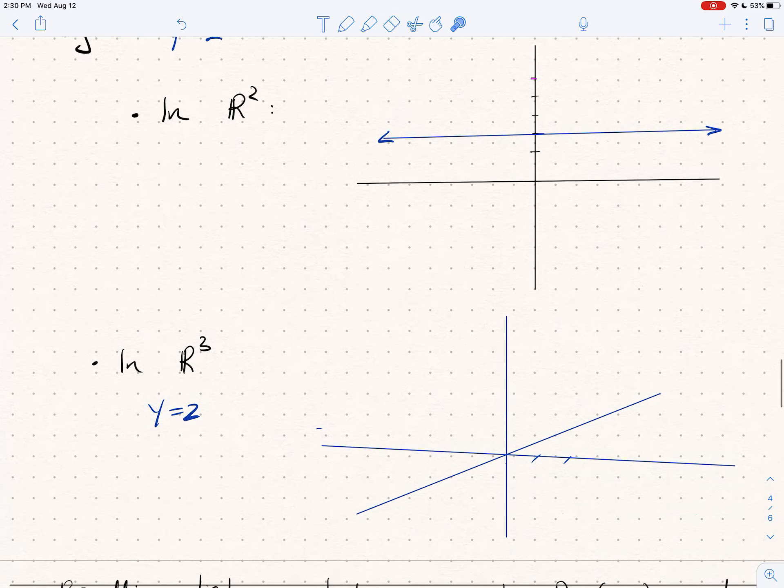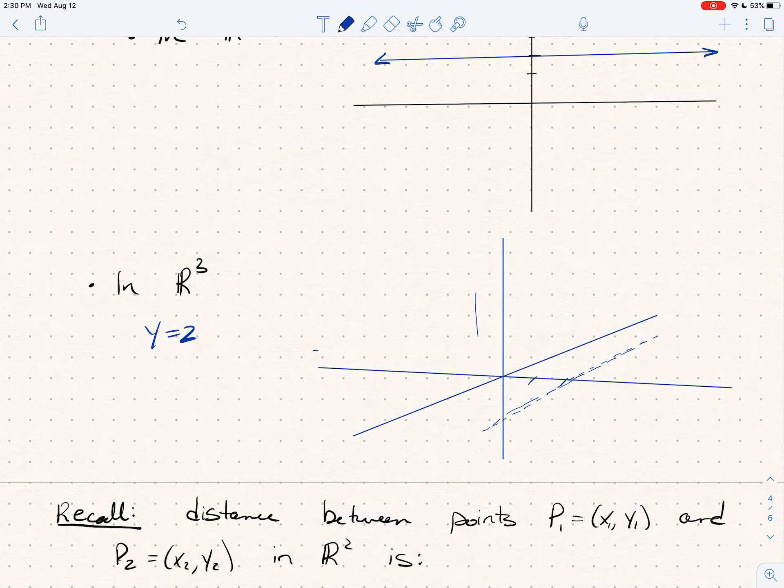But if I write down y equals 2, same equation but I'm working in 3-space, then y equals 2 isn't just a line anymore. There is this sense that yeah there's the line y equals 2 that's the same line as before, but y equals 2 that equation gives me an entire plane in 3-space.